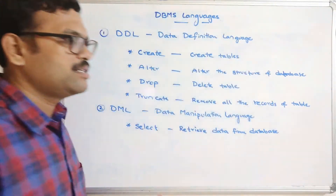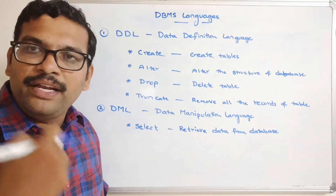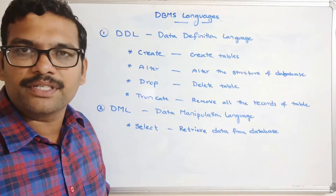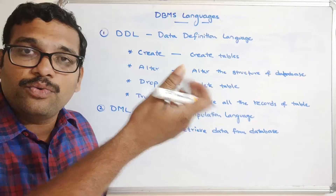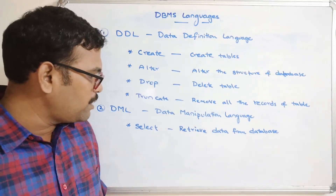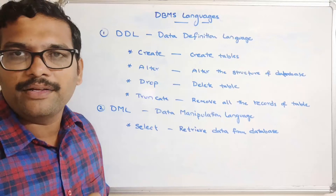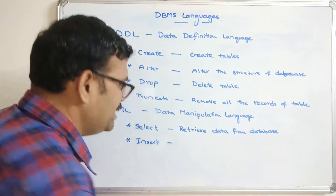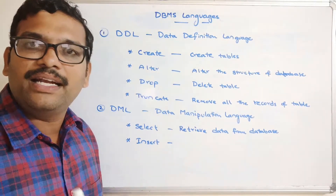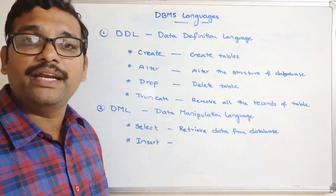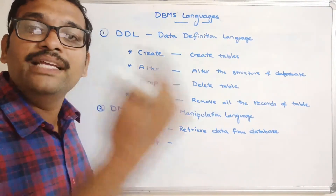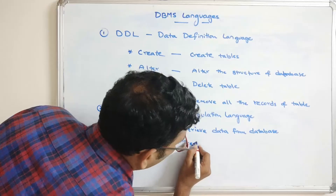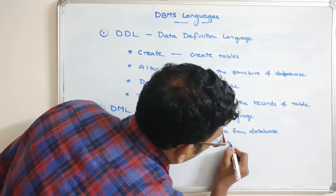For example, consider a student table — if you need to get the details of all students who got greater than 90%, you use the SELECT command to retrieve that selective data. The next command is INSERT, which is used to insert data into the database — for example, adding student details as rows into a table.